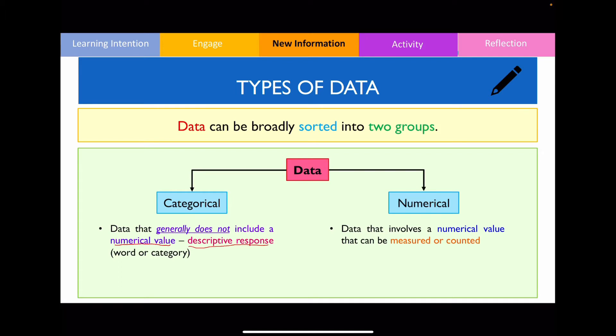In contrast, numerical data will always have a number associated with them which can either be measured or counted. In terms of how we sort these data, categorical data can be sorted into groups or categories, whereas numerical data, because it has a value assigned to it, we can actually sort them from smallest to largest.